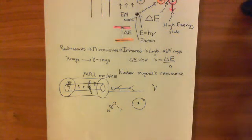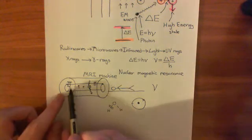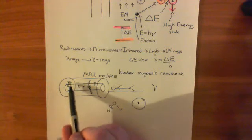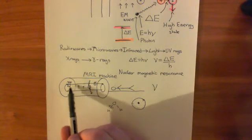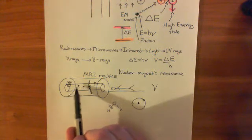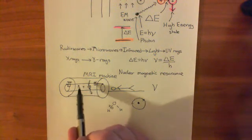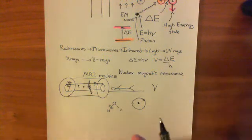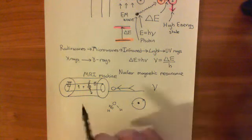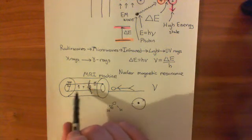And basically what you do is you gradually alter either the frequency that you use, or the magnetic field strength of each patch, in order to go through each little portion of this chamber and work out the density of protons, or the density of water, because those two are proportional, at least roughly, at every point within this chamber.